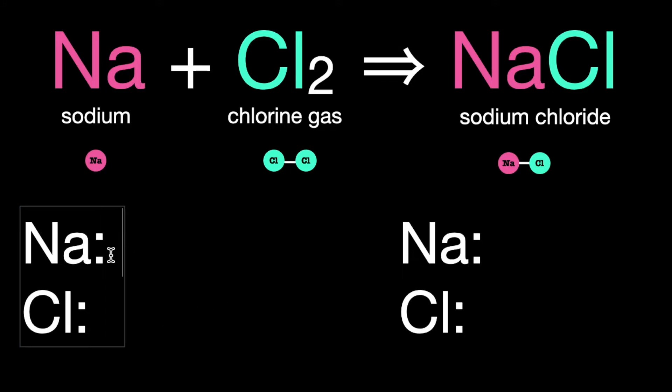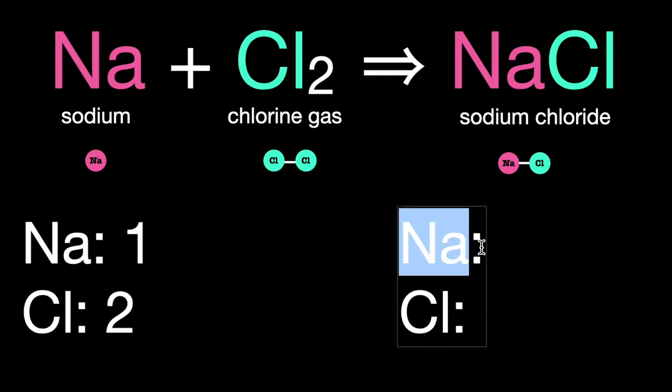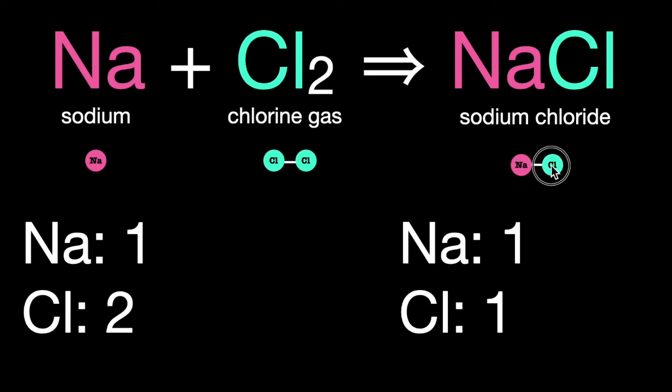Let's count up. On this side, we have one sodium atom here. And on this side, we have two chlorine atoms inside this one molecule. On the right, we can see we have just one molecule, and it has one sodium and one Cl over there too.